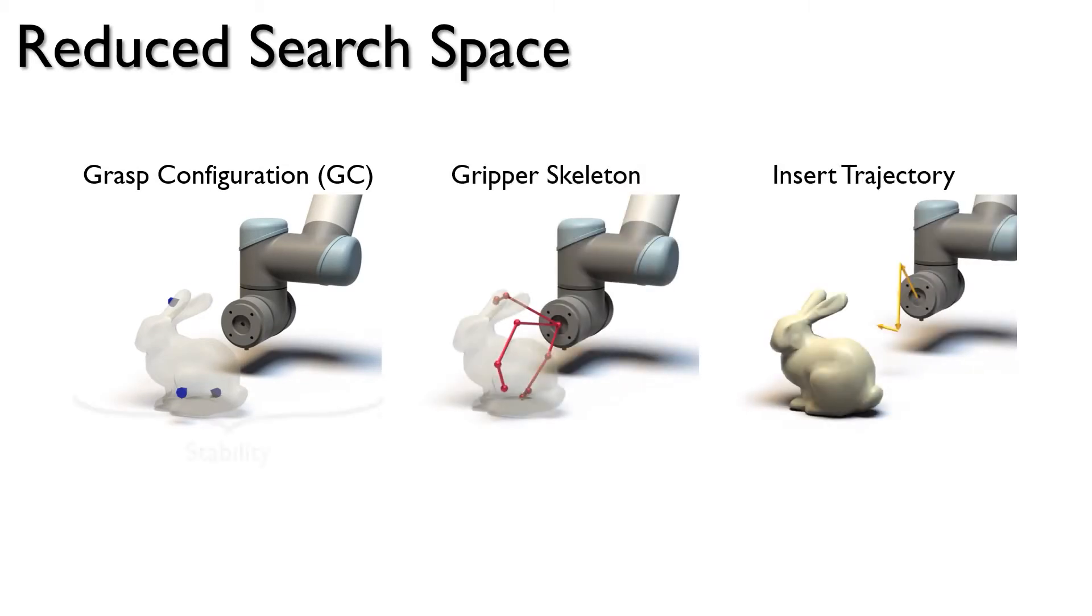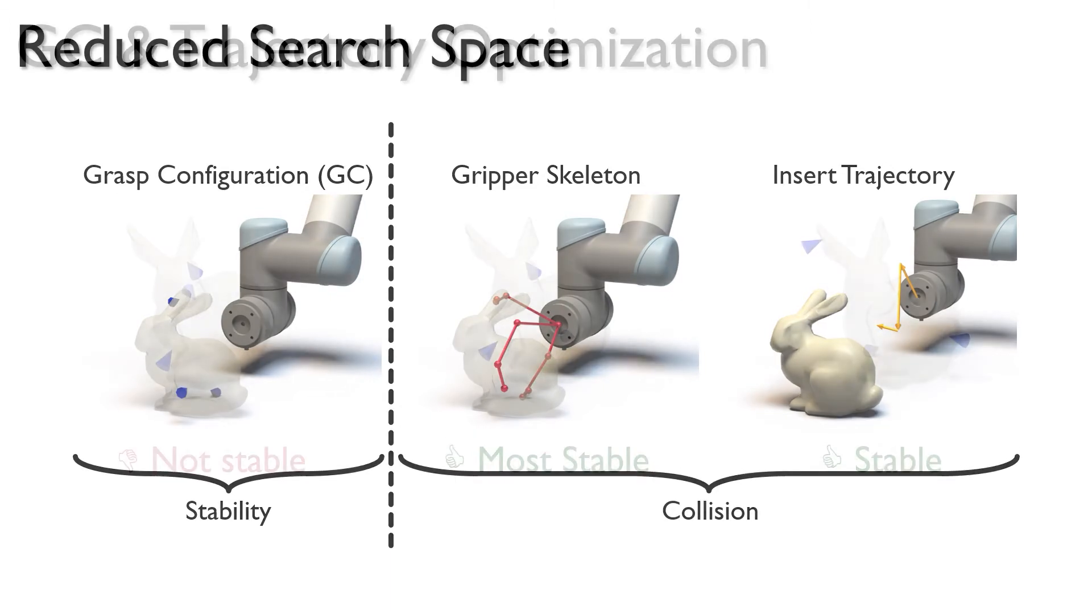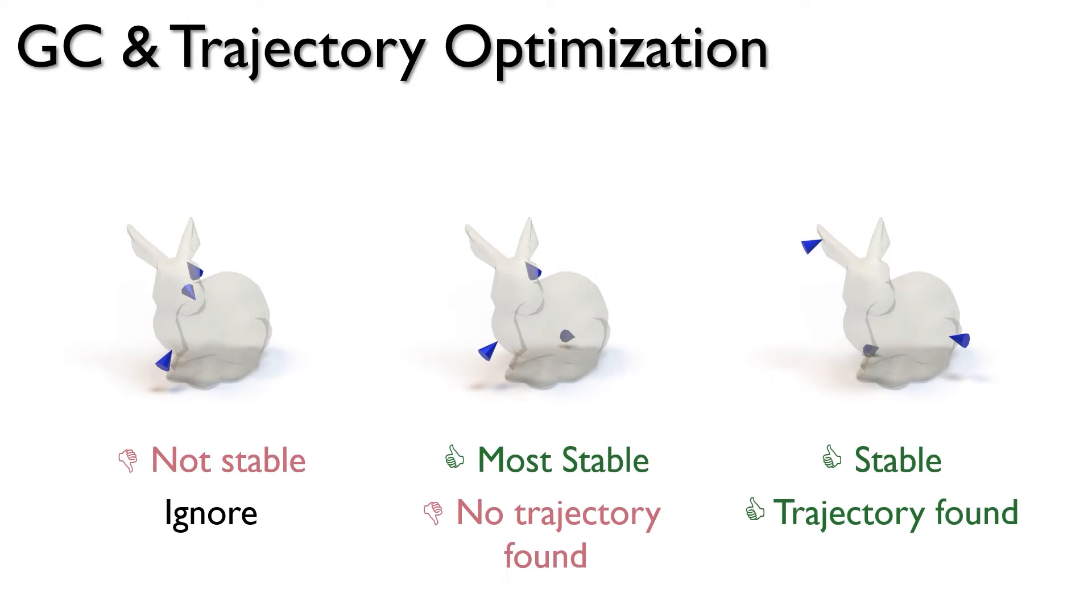Since a GC fully determines stability, one could find the GCs that maximize stability and then co-optimize the other two to ensure no collision. However, finding a valid insert trajectory for the best GC might not be possible, because the GC restricts the gripper design, which restricts the available trajectory.